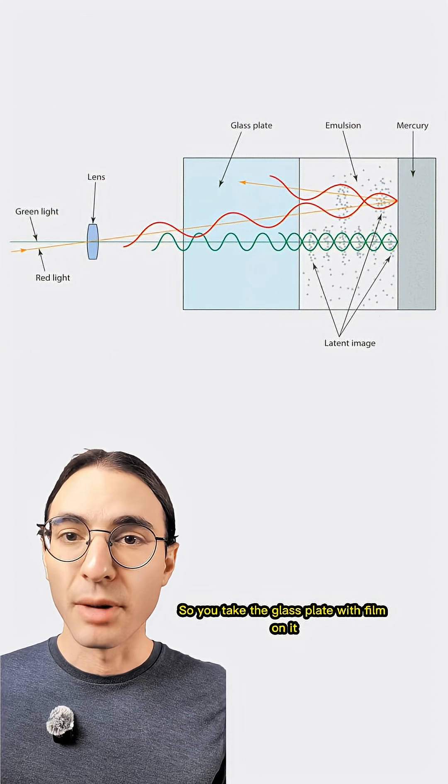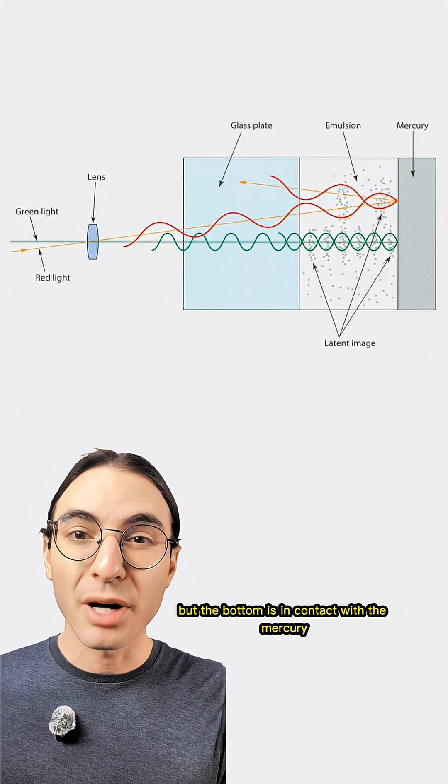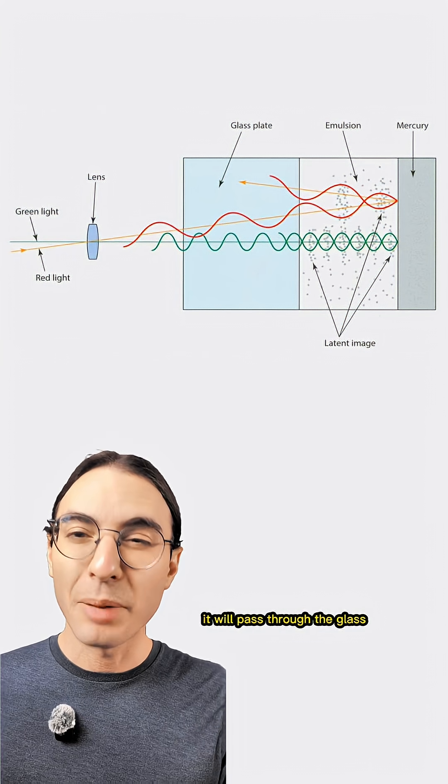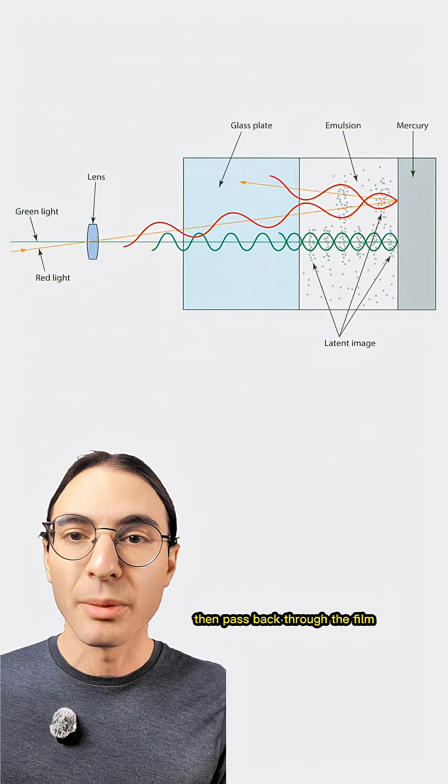So you take the glass plate with film on it and place it face down in a thin layer of liquid mercury, so the top of the glass is still exposed to the air, but the bottom is in contact with the mercury. Now, if light comes in from the top, it will pass through the glass, then the film, then reflect off the mercury, then pass back through the film and out through the glass.